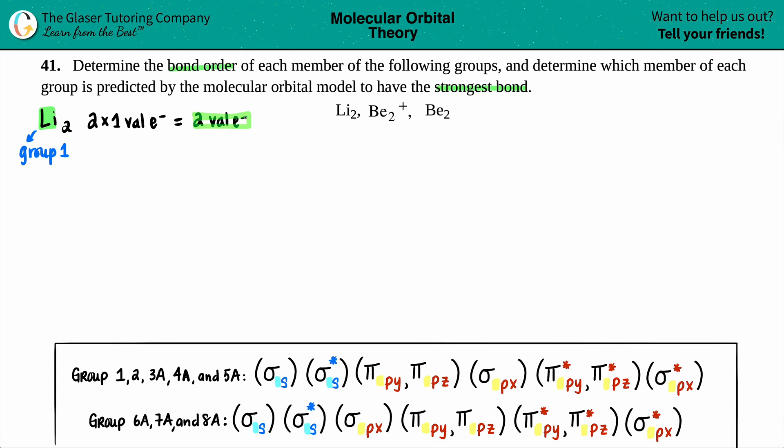Now let's do the Be on the other side. I'm not going to do the plus one yet because it's always good to do the neutral one first and then adjust. Beryllium is in group two, so group two means two valence electrons, but you got two berylliums. Two times two valence electrons will get us at a total of four valence electrons.